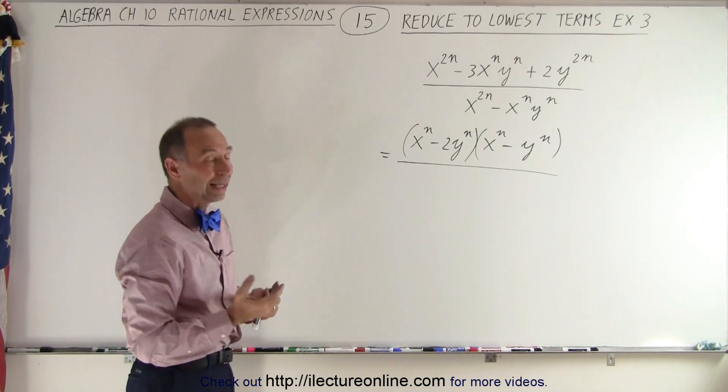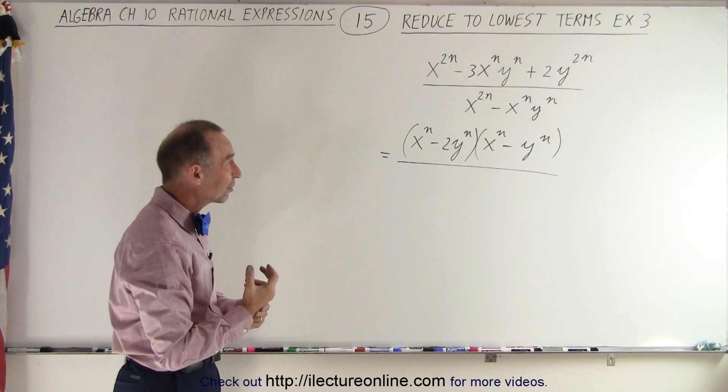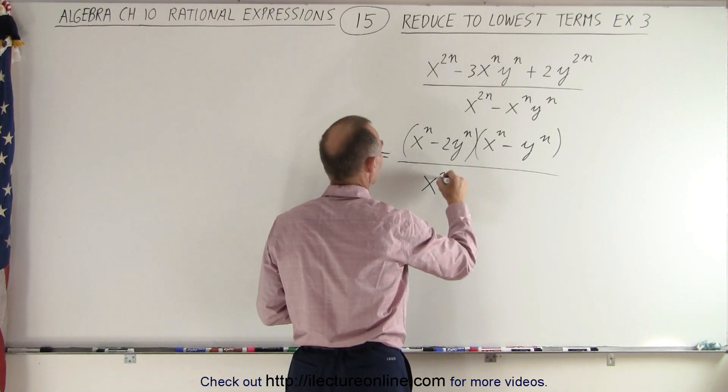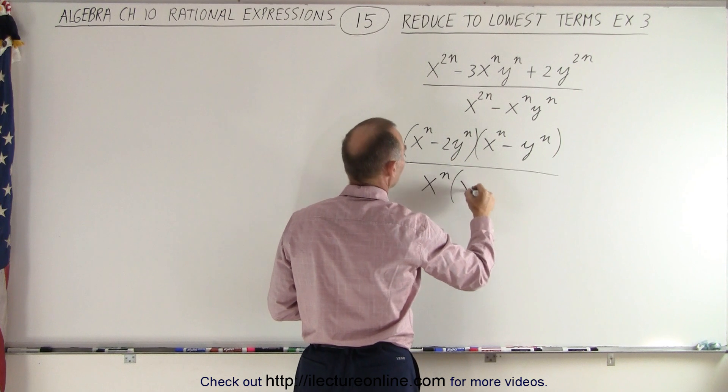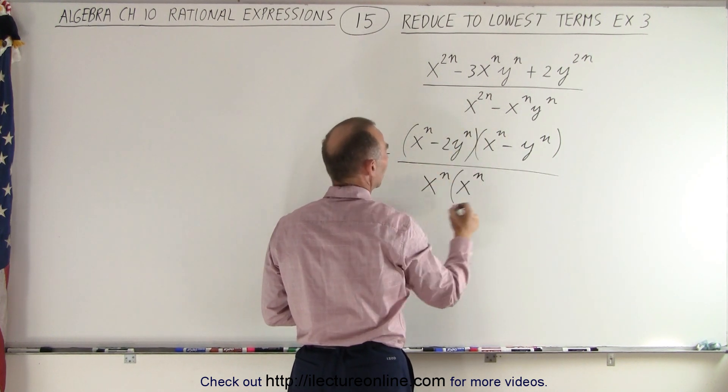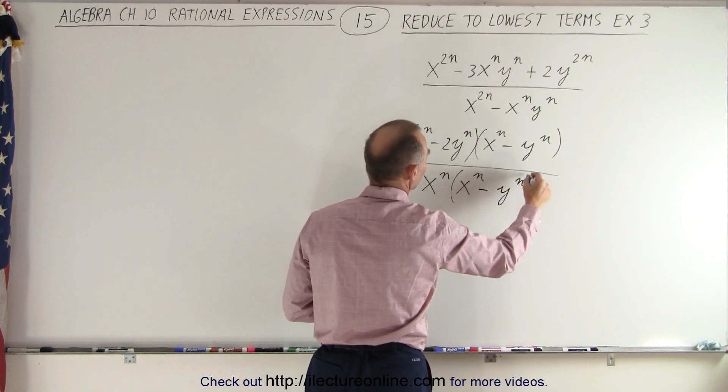In the denominator, I need to factor out a common factor which would be x to the n. Let's do that. If I factor out an x to the n, I will be left with an x to the n, because if I multiply these two together I get x to the 2n, and here I get y to the n.